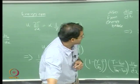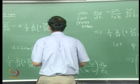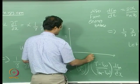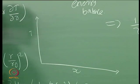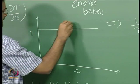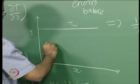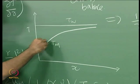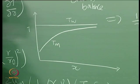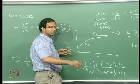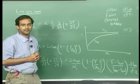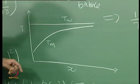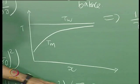Last time we derived how the profile should vary. If you plot your profile as a function of X, the wall temperature is a constant; however, your mean temperature will vary such that the difference between the mean temperature and wall temperature is an exponentially decaying function. So as X goes to infinity, the difference goes to 0. Therefore this is how the mean temperature varies.